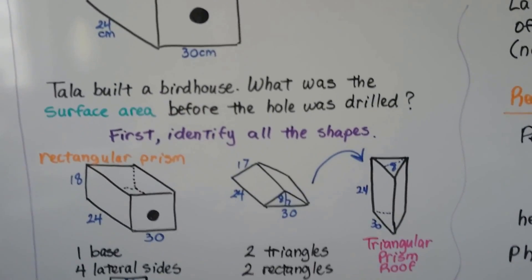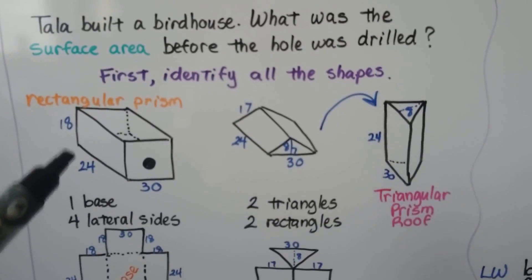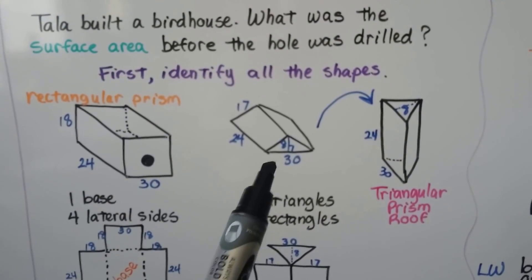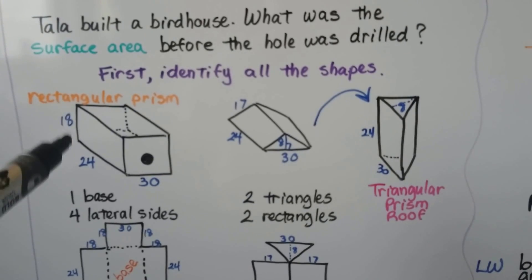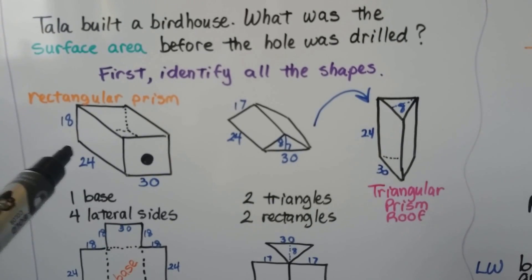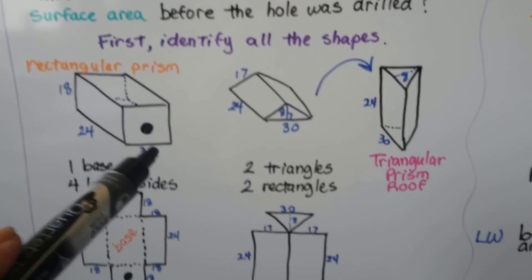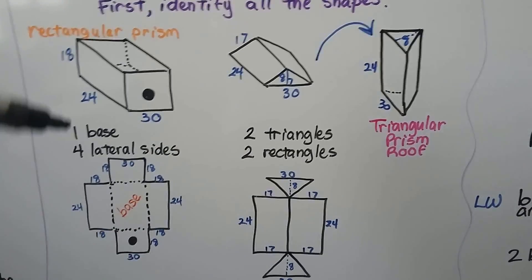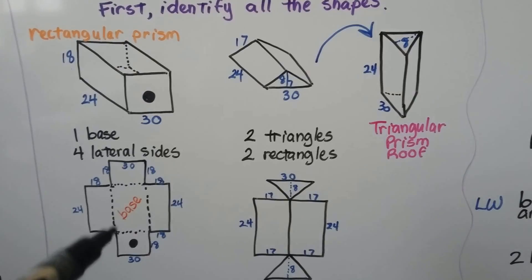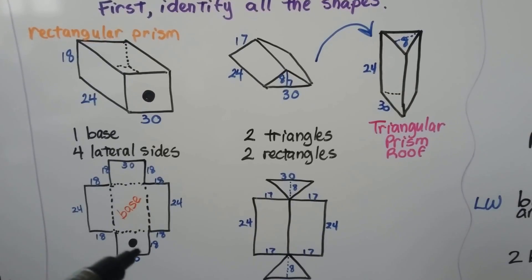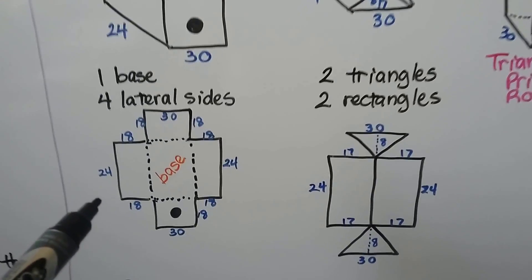We identify all the shapes. There's a rectangular prism and there's a triangular prism. The rectangular prism is 18 centimeters one way, 24 this way, and 30 this way. It has a base on the bottom and four lateral sides. We can see all the measures.